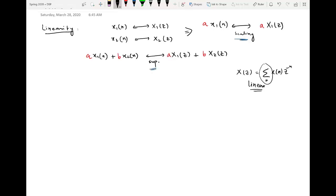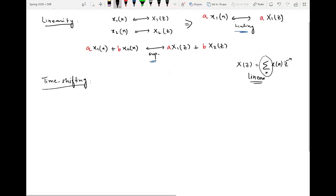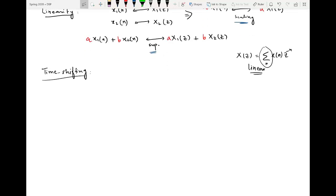The second property that we will discuss is time shifting. What does time shifting mean? Time shifting means that whenever we delay a sequence by, let's say, n₀, what will happen in the Z-transform?